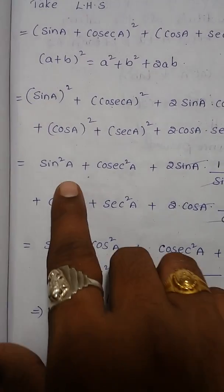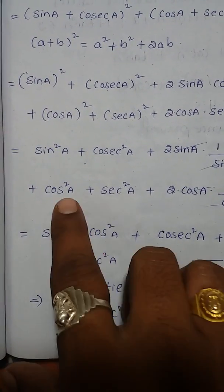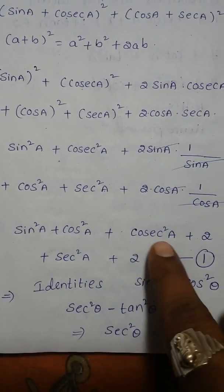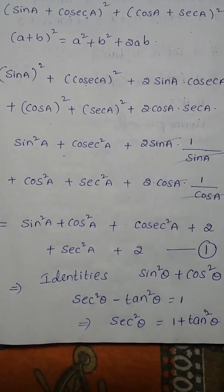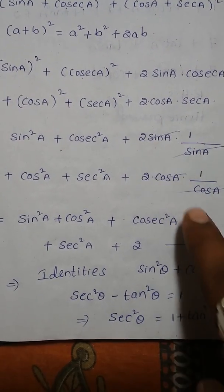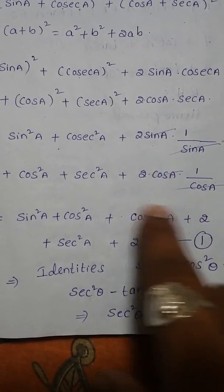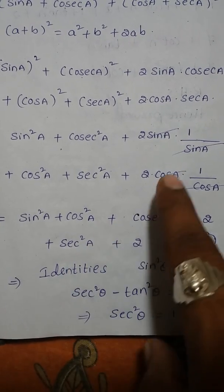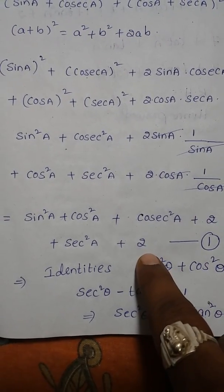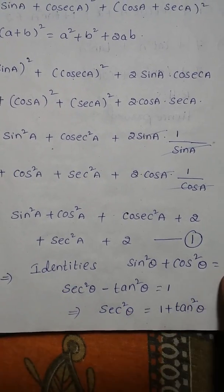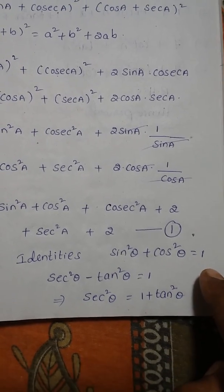Now we group: sin²A + cos²A + cosec²A + 2 + sec²A + 2. Using the identity sin²θ + cos²θ = 1, so sin²A + cos²A = 1.